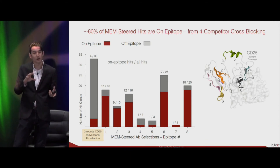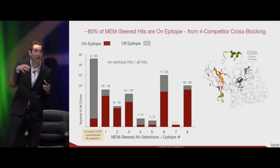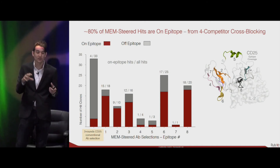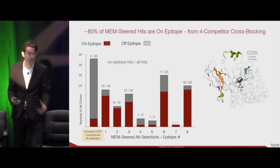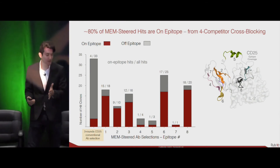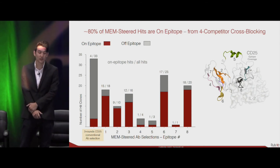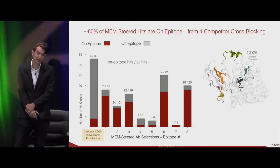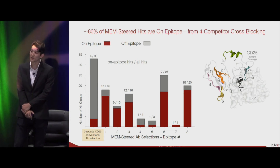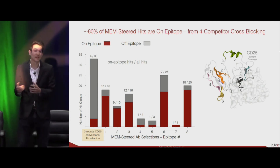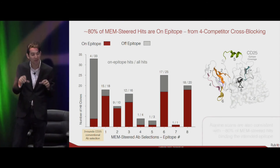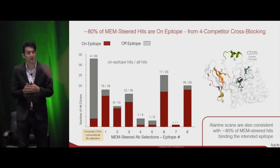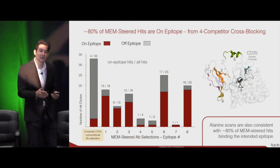The next question is how do you know where the antibodies are actually binding — to the epitope you intended? We did a four-competitor cross-blocking study where one competitor was IL-2 and the remaining three were antibodies with known binding locations on CD25. With that cross-blocking profile, we could triangulate where our antibodies roughly bound, and found that roughly 80% of our MEM-selected hits were binding on-epitope, consistent with these profiles. We corroborated these results with orthogonal alanine scan mutations, also showing roughly 80% of our MEMs binding their intended epitope.